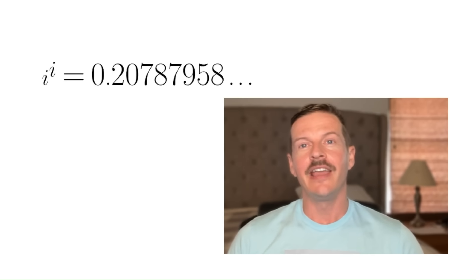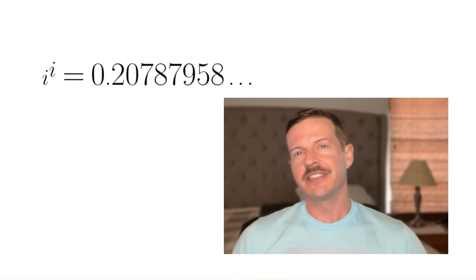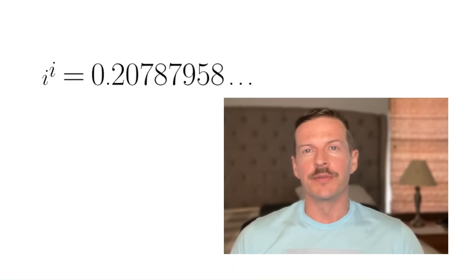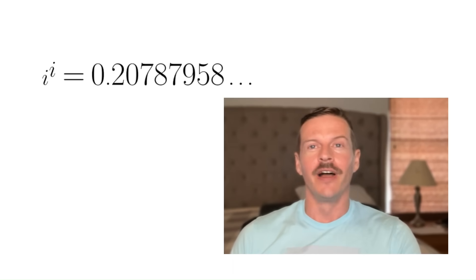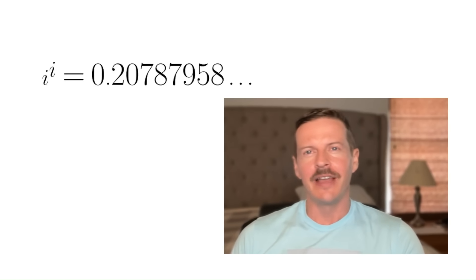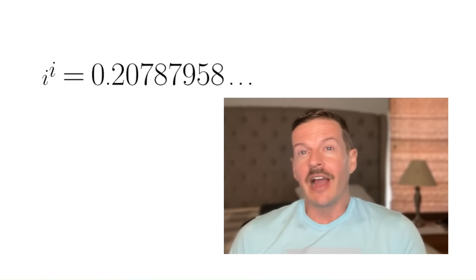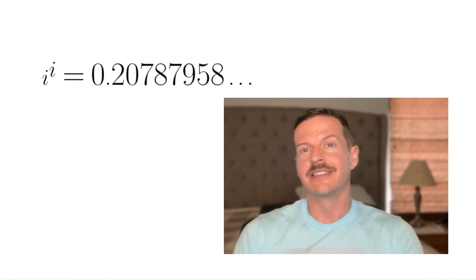Did you know that i to the power of i is actually a real number? In fact, it's not just a simple real number like negative one or one. It's this kind of crazy looking decimal, 0.20787958, and it goes on and on. So that seems very strange — how could that possibly be the case?